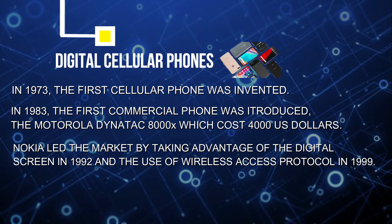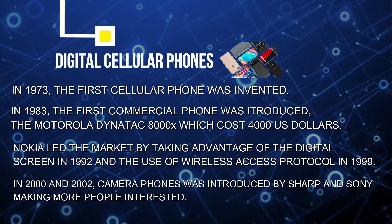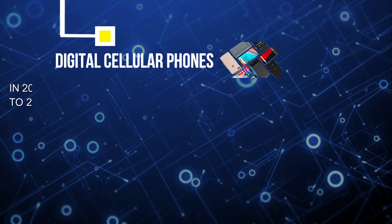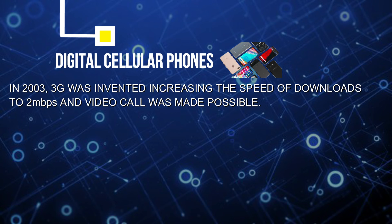Further improvements were first seen in 1999, when Nokia introduced the 7110, the first device that uses wireless access protocol, meaning it can access the internet wirelessly. The first camera phone was introduced in 2000 by Sharp in Japan, and in 2002, Sony introduced a phone with a clip-on camera, furthering interest in camera phones. The invention of 3G made the download speed on mobile phones up to 2 Mbps, and in 2003, video calling was made possible.